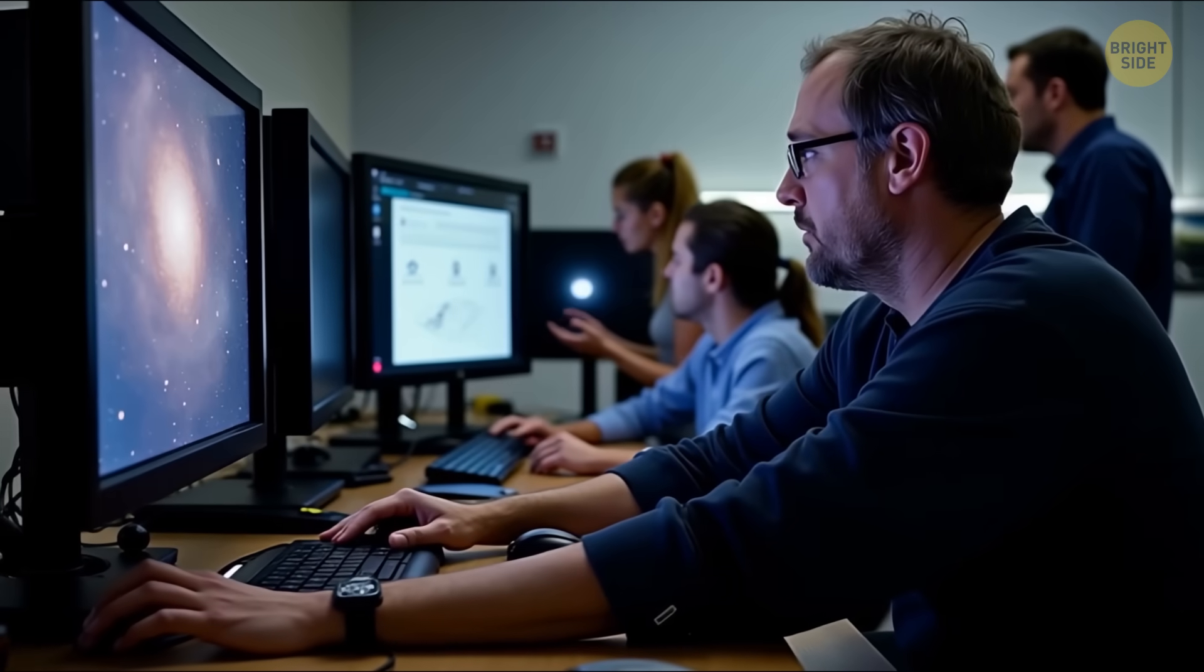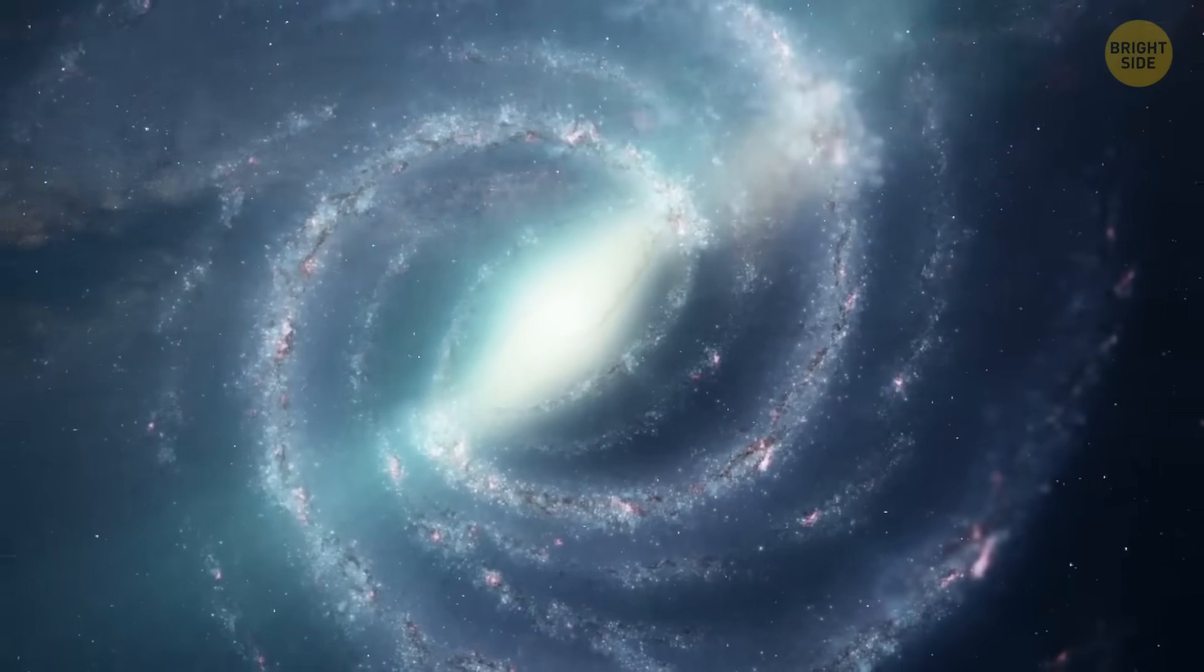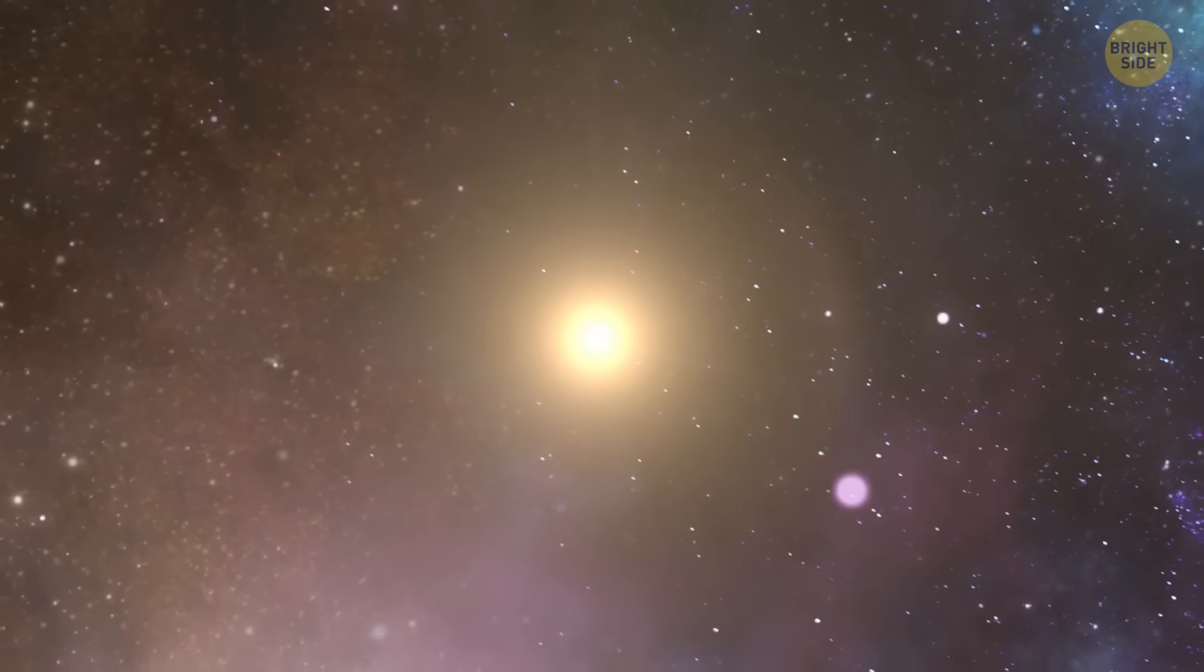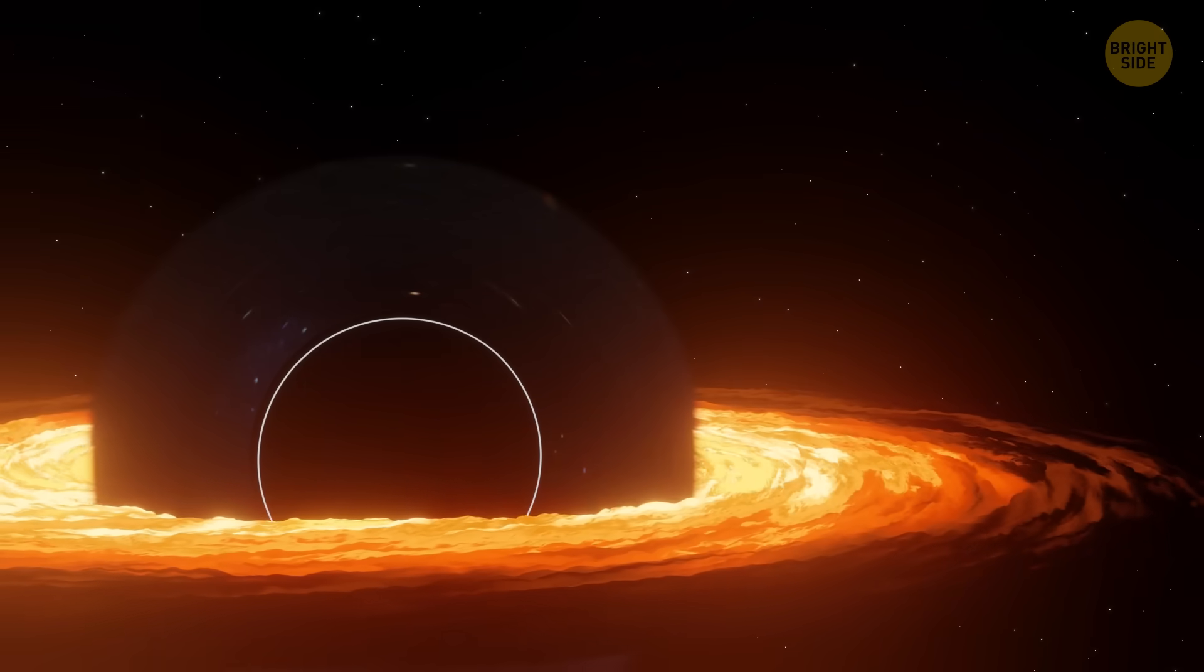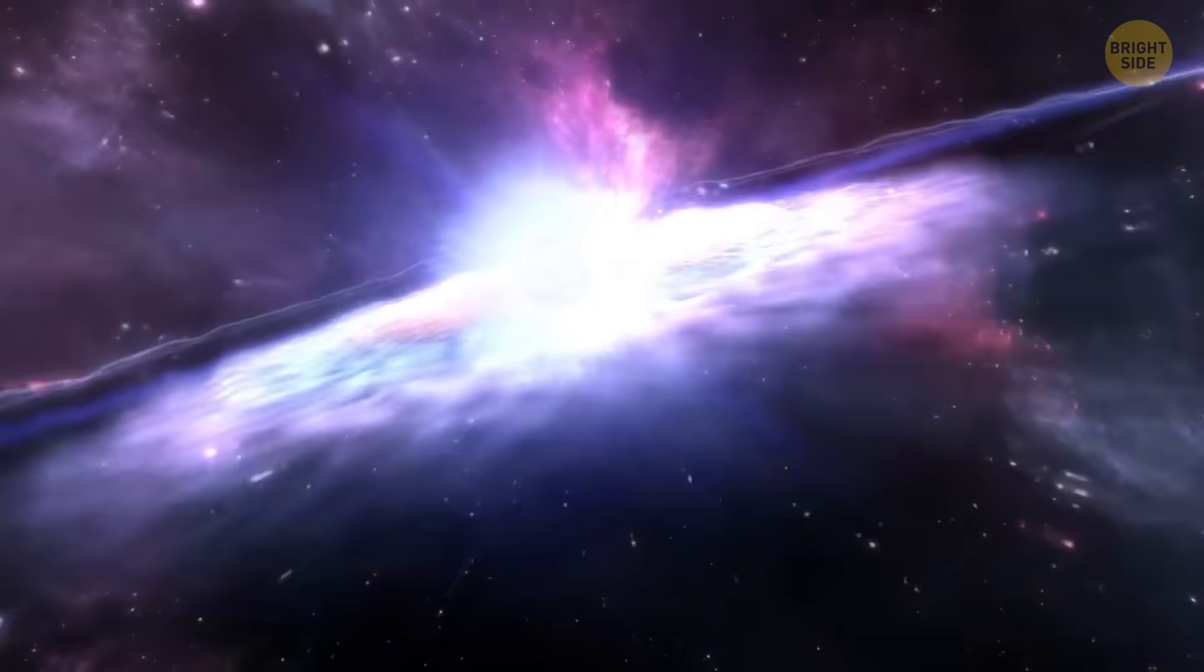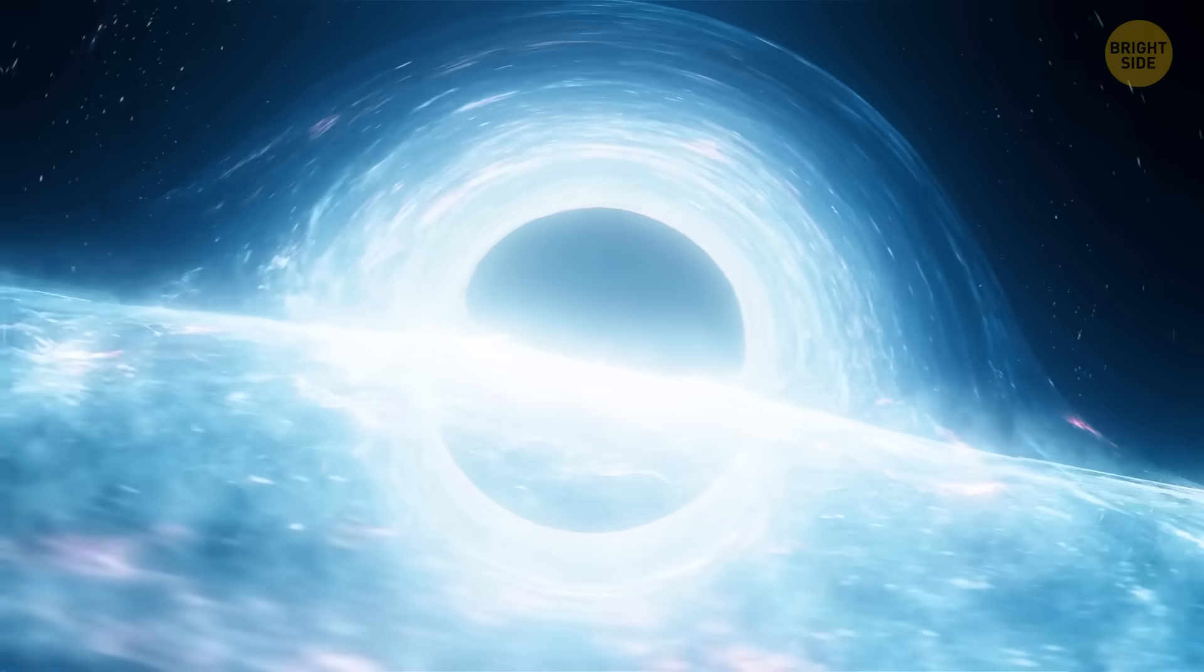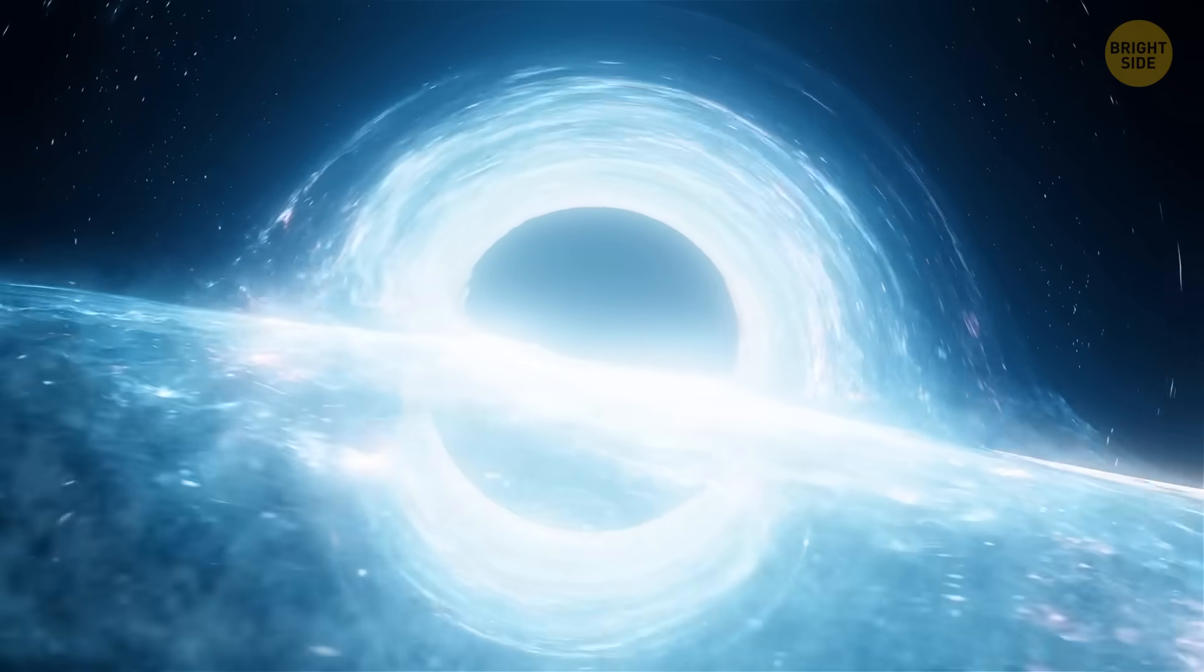So what exactly did scientists see? It was a glowing light coming from neon gas that needs a huge amount of energy, much more than what normal stars can make. This glow is a strong clue of a hidden active galactic nucleus. Even powerful star explosions, called supernovas, don't give off enough energy to make this kind of light. So a supermassive black hole seems like the most likely reason.